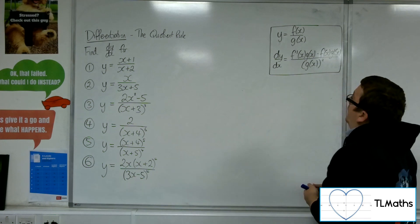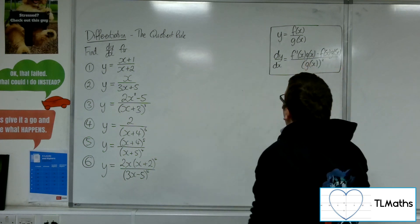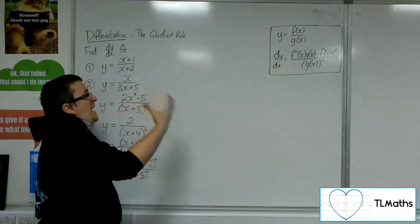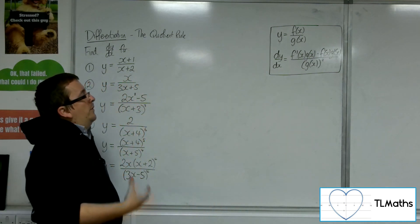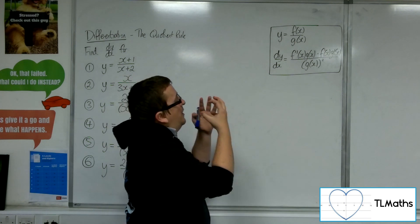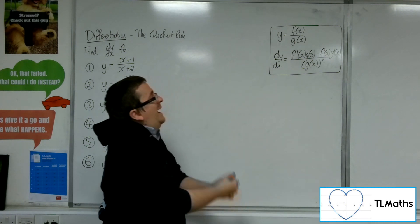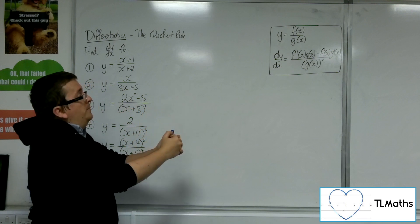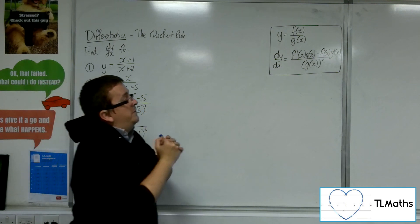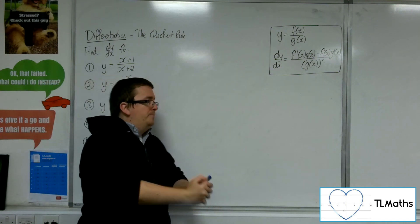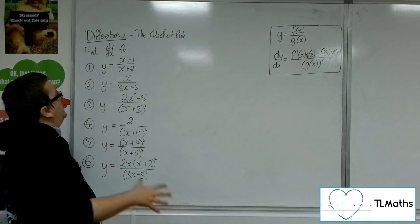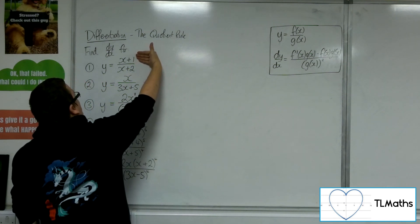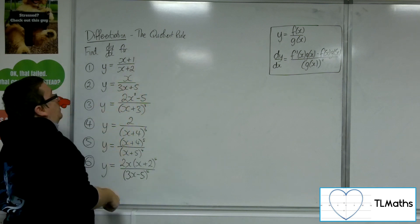Let's start off with number 1. If we remember the quotient rule formula, when we've got f of x over g of x, we want to differentiate by starting at the bottom, g of x, and multiplying by the derivative of the top. Take away the top times the derivative of the bottom, over the bottom squared.